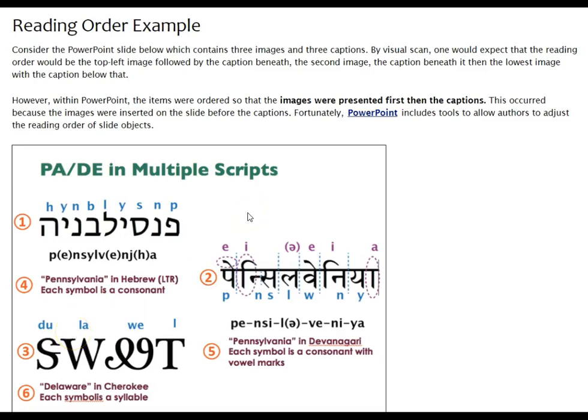However, on a flat slide, screen readers will read the left column first, then move to the column on the right, whereas the intended learning is to first contrast Pennsylvania in two different languages.